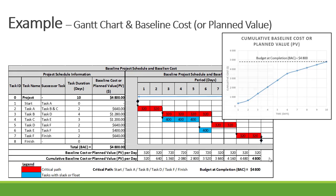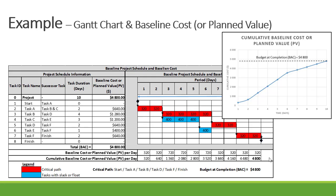Let's look at our chart — the cumulative baseline cost, or planned value for the project. That is the blue line, showing our cumulative cost with our budget at completion at $4,800.